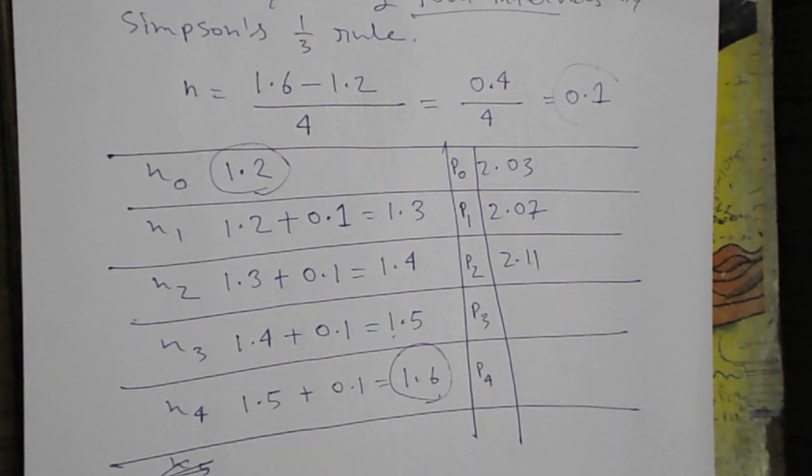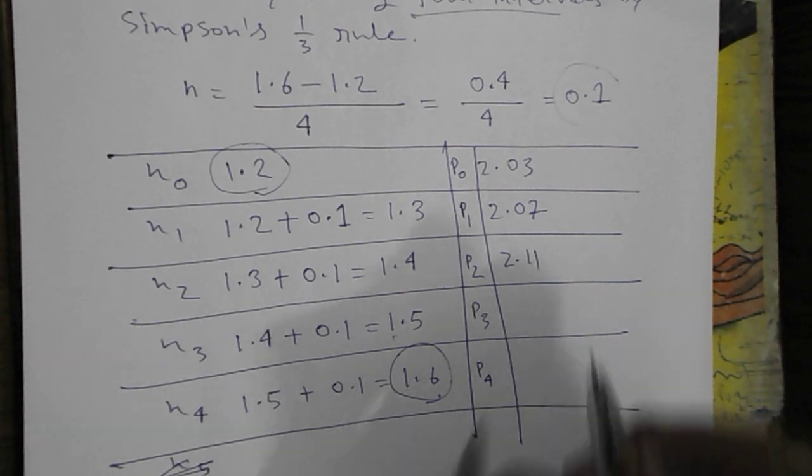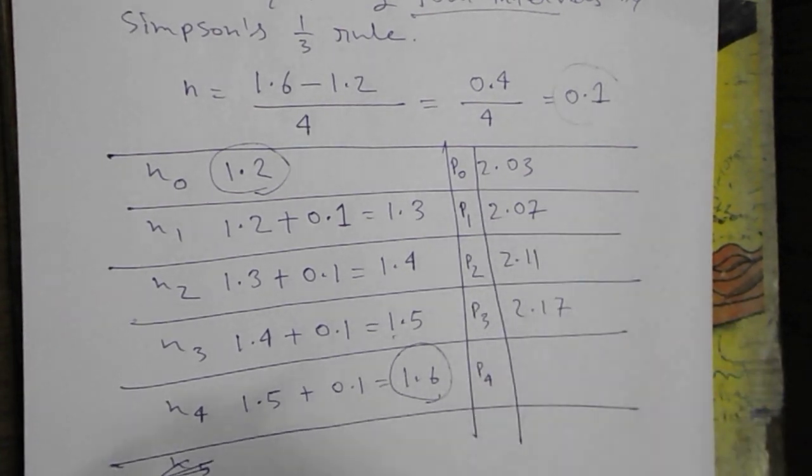After that we will calculate 1.5. 1 by 1.5 is 0.67. 0.67 plus 1.5, that is 2.17.